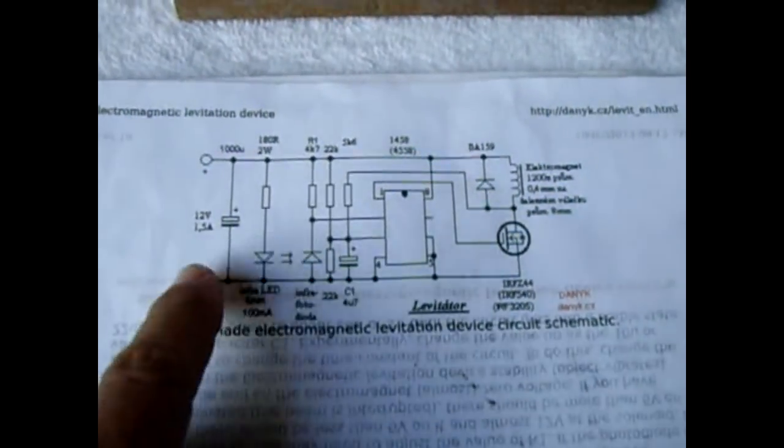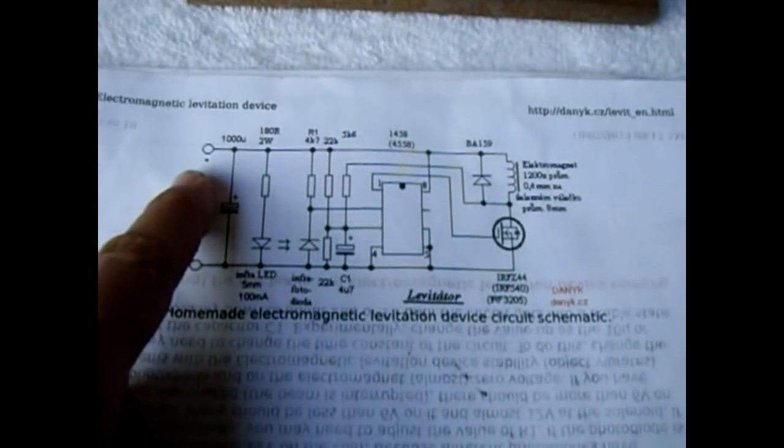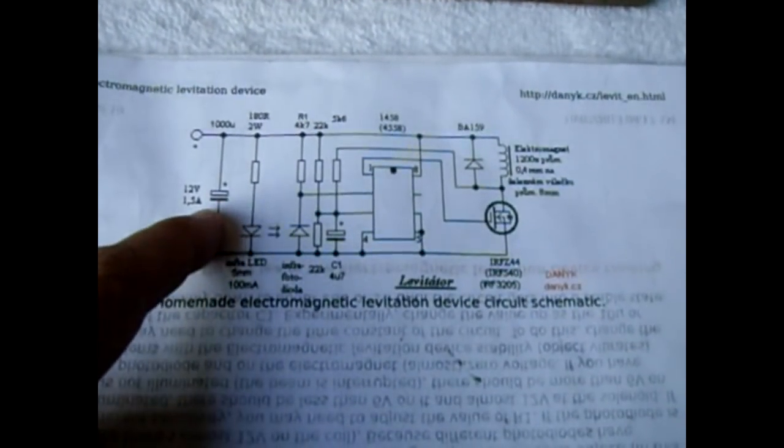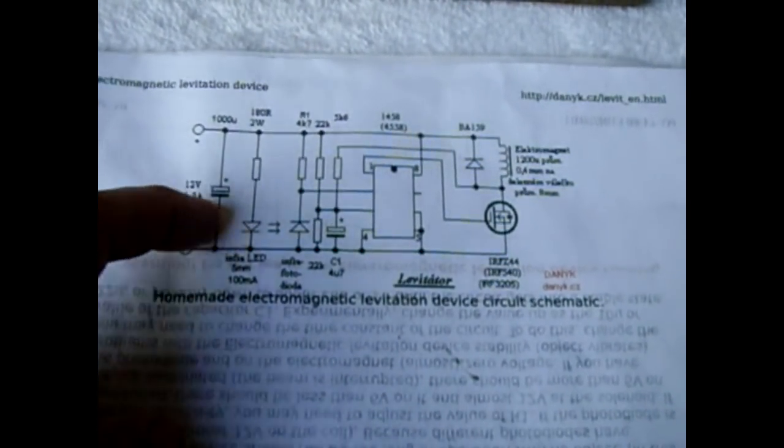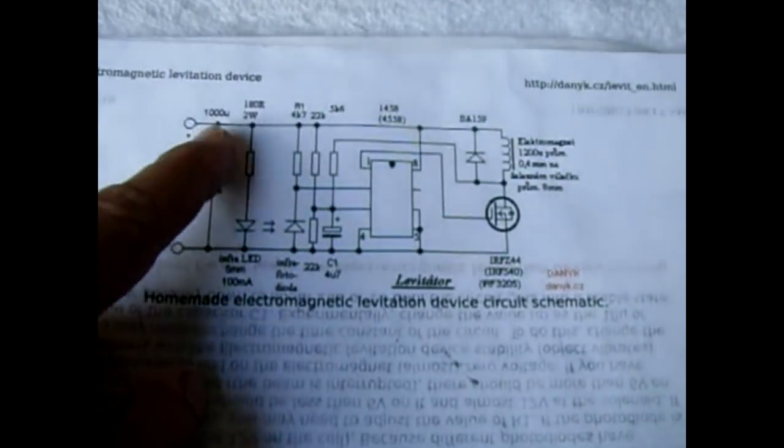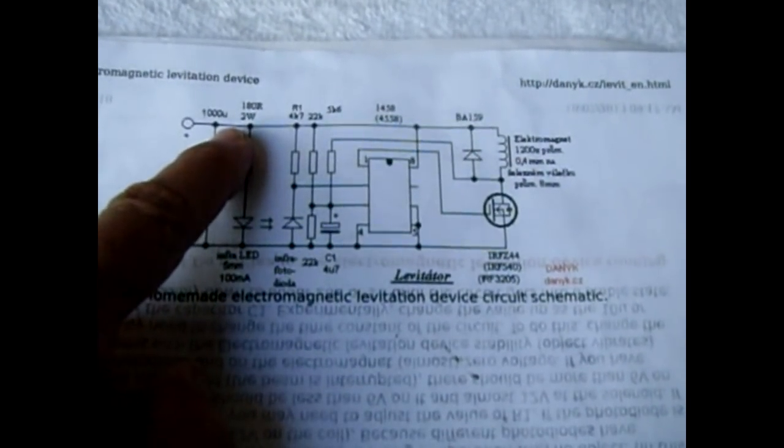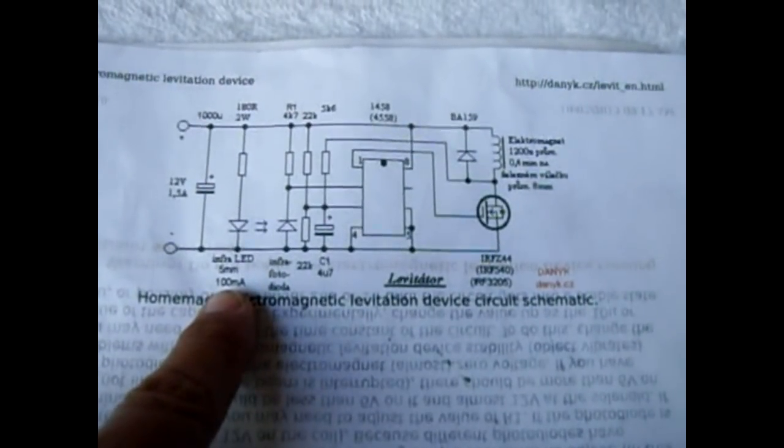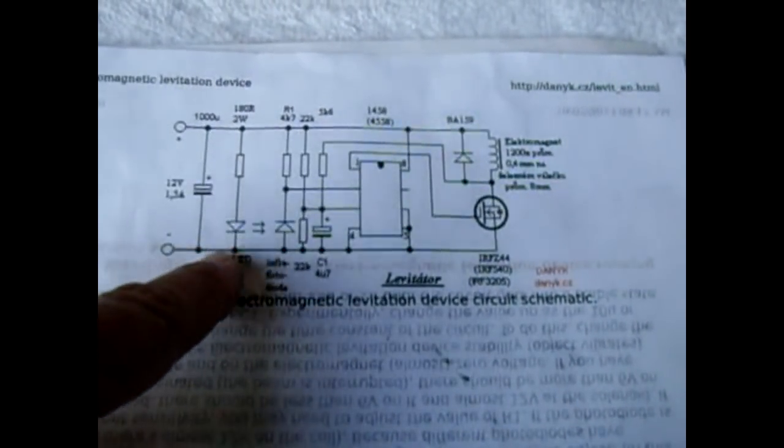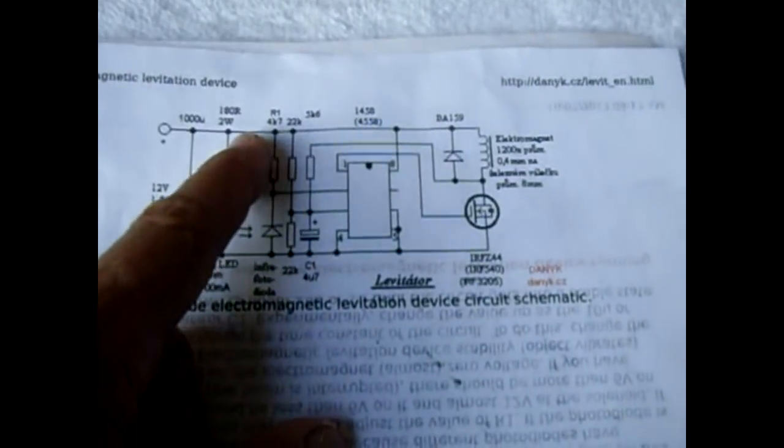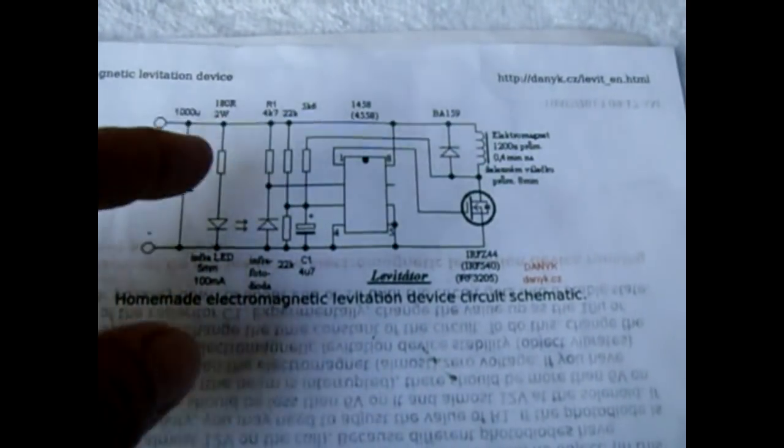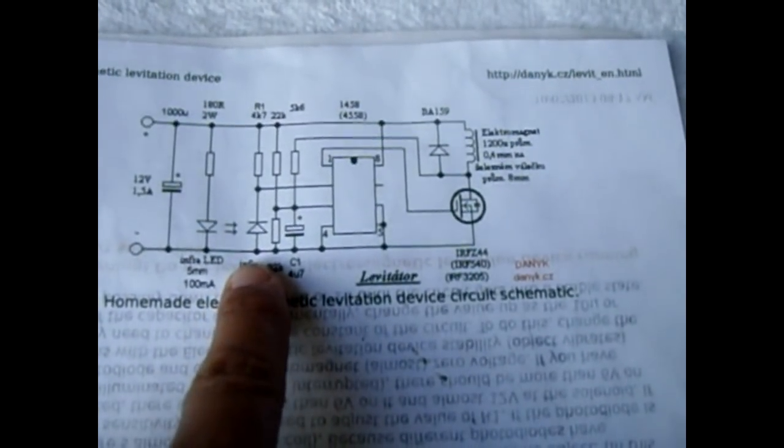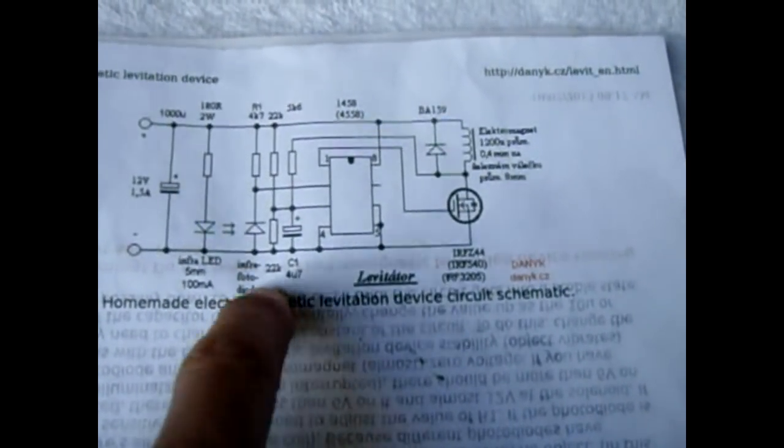Okay, now that's the schematic. You pretty much have your positive and negative, 12 volts. You go a little higher if you want. I have a 1000 microfarad, 1000 UF capacitor. A 180R or 180 ohm 2 watt resistor. It's in series with the infrared LED. That is always on when the circuit's on.